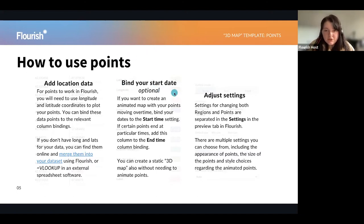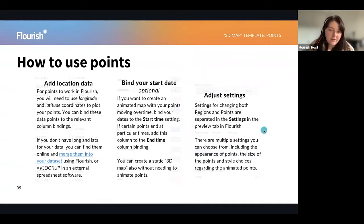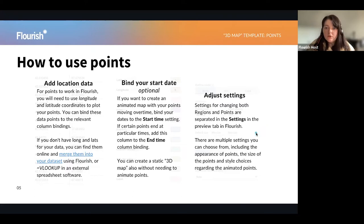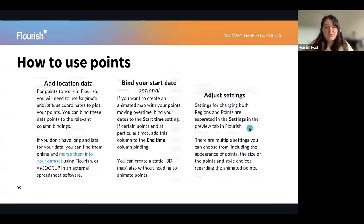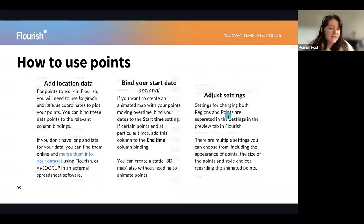Secondly, you will want to bind your start date as well if you want to create an animated map with your points. You can bind the date format that you have and then you will see a nice timeline being created within the preview window showing your data growing or shrinking over time. If certain points end at certain times, you can also add an end column binding. For example, if you had the opening of a building and it then closed, you could put that end date in. But this is completely optional — you can just have a static 3D map as well.